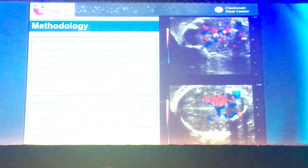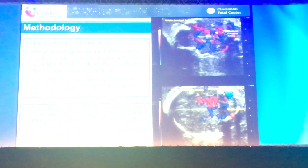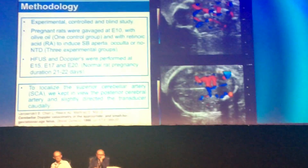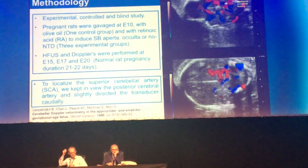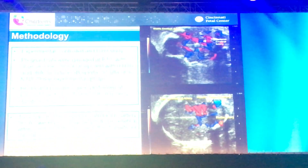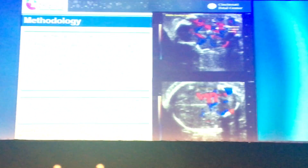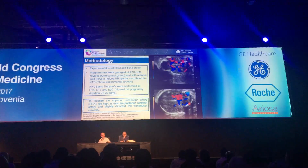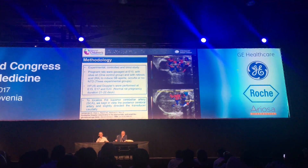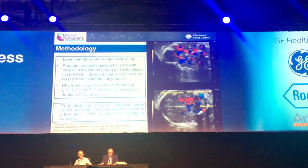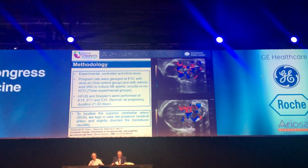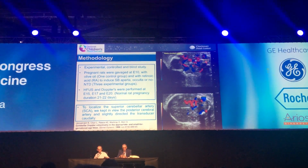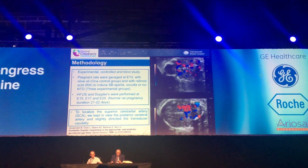In the first video, the first thing we need to do is identify the circle of Willis. Once we identify the circle of Willis, instead of paying attention to the middle cerebral artery as we usually do, we pay attention to the posterior cerebral artery. Once we have identified the posterior cerebral artery, we slightly direct the transducer caudally, and we will see the superior cerebellar artery arising from the basilar artery, posterior and caudally to the posterior cerebral artery. The main vascularization of the cerebellum is through three arteries: the superior cerebellar artery, which is easily identified by ultrasound as a branch of the basilar artery, and the other two inferior cerebellar arteries, which are not easily identified by ultrasound.